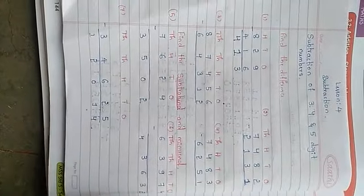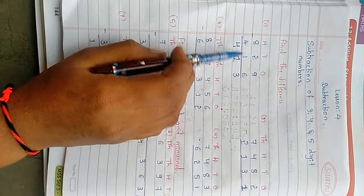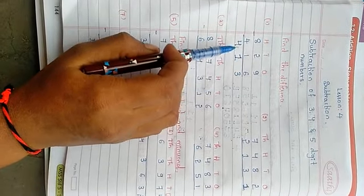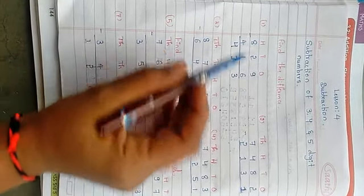Next, the second problem: 829 minus 416, you will get 413. I told you, you can cross check your answers. How to cross check?